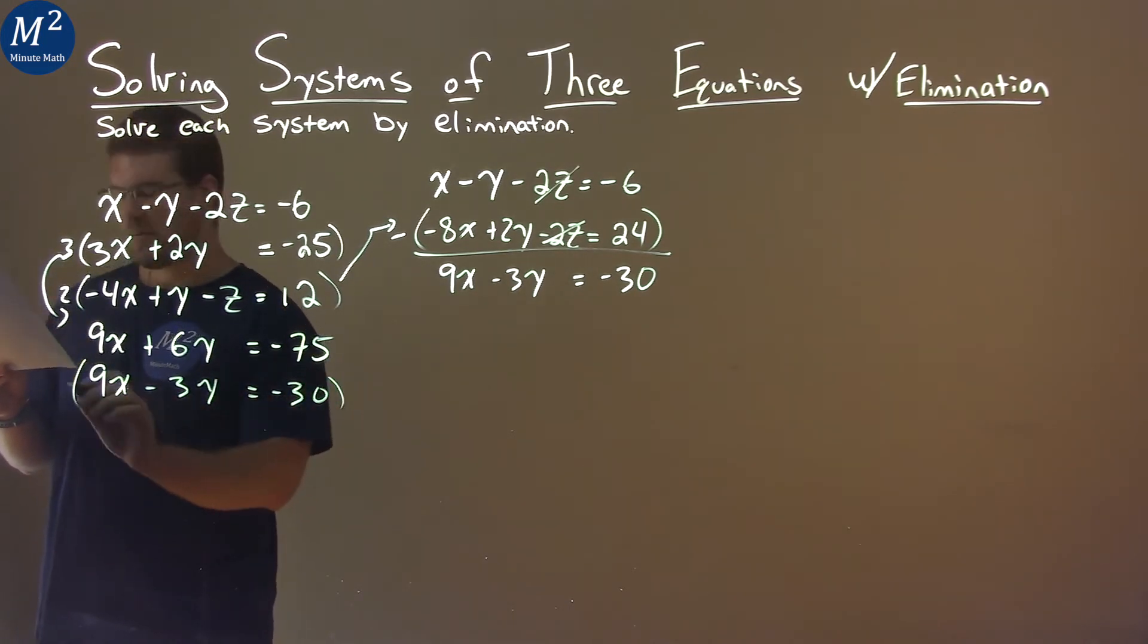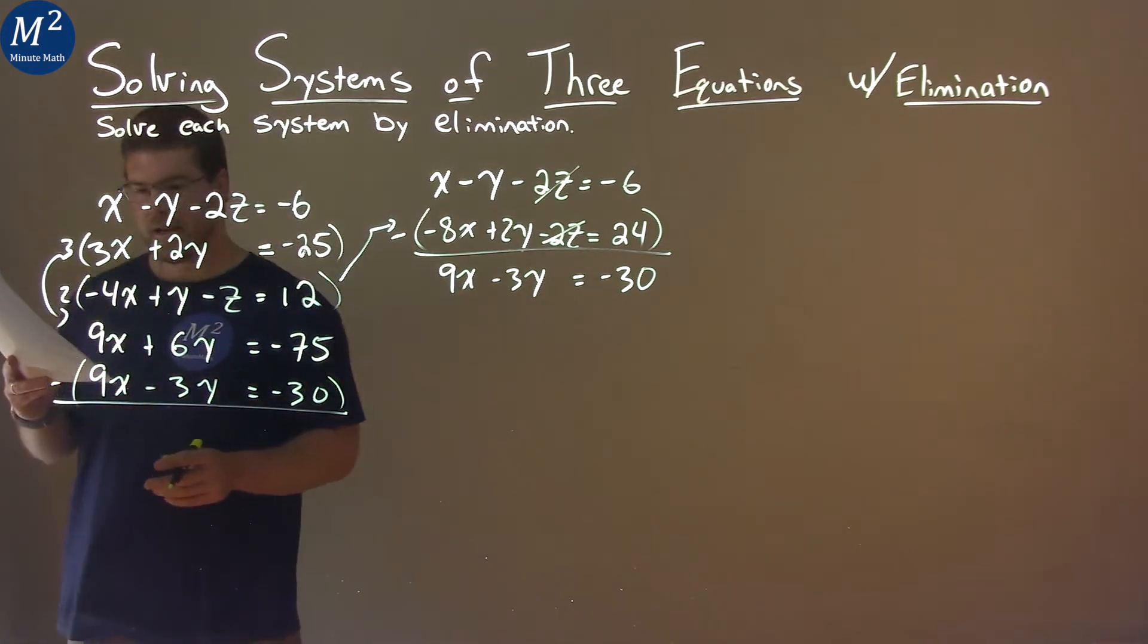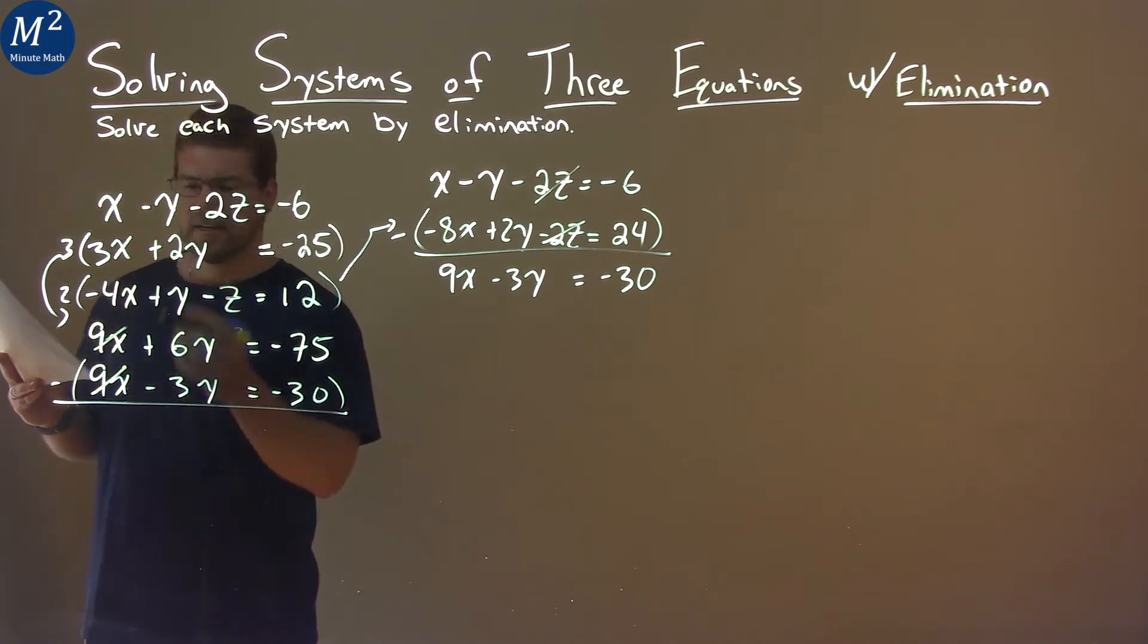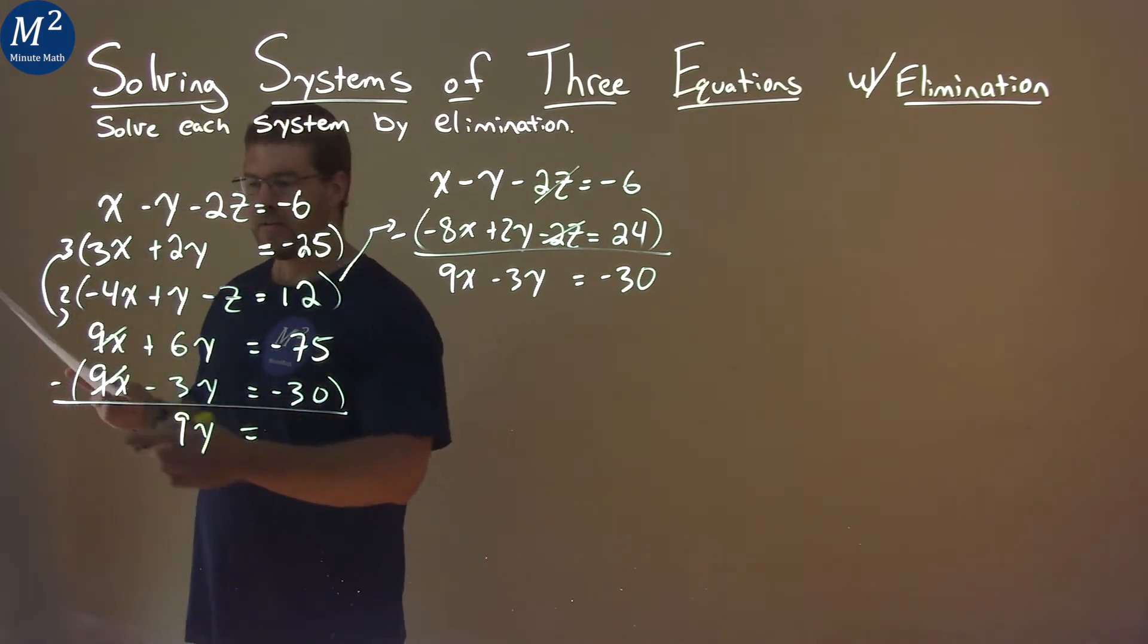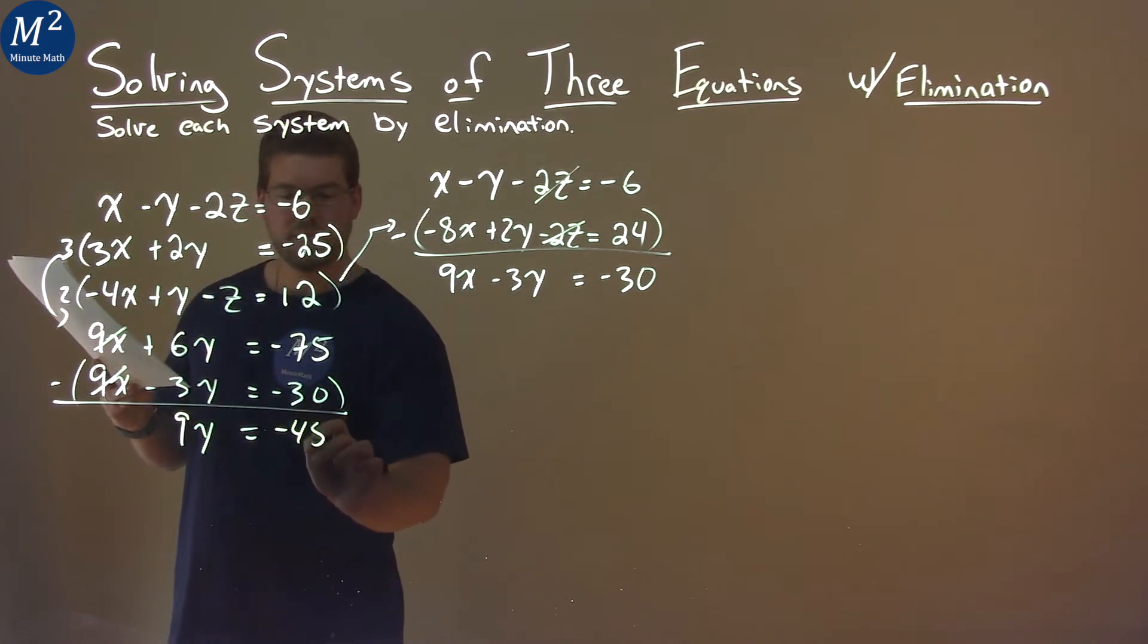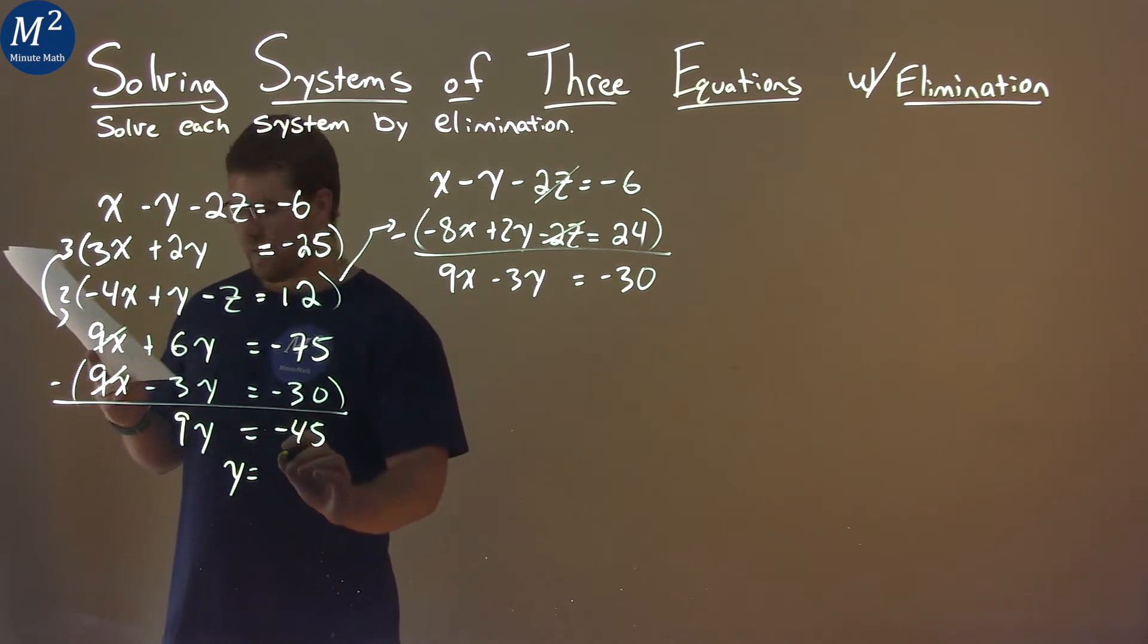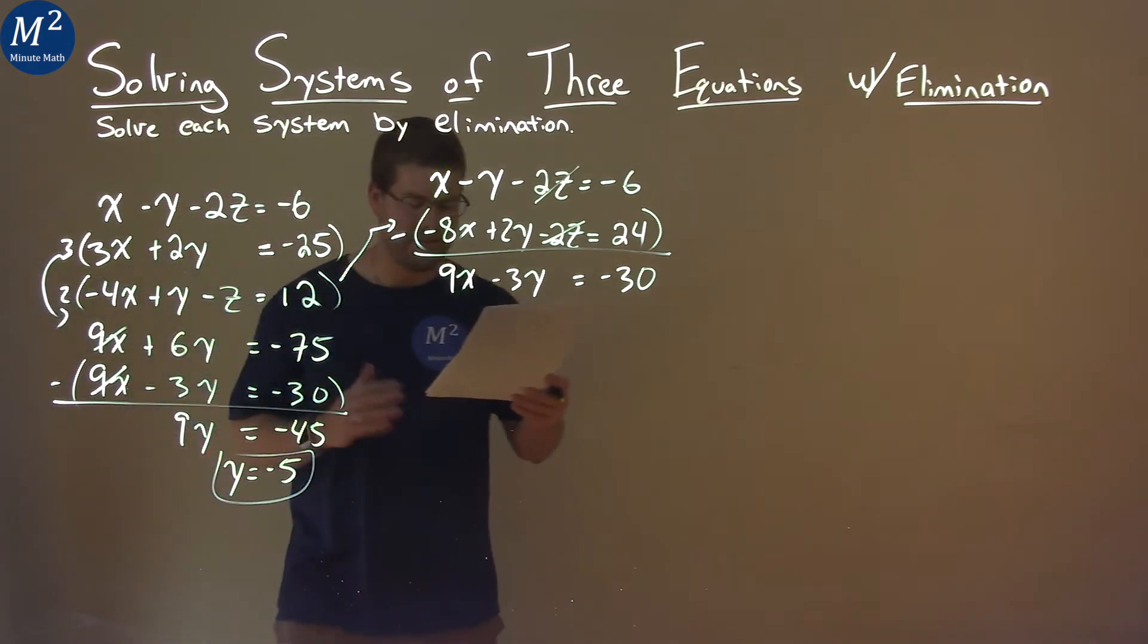Let's subtract these two equations. 9x minus 9x cancels. 6y minus negative 3y is like adding 3y, which gives us 9y. Negative 75 minus negative 30 is negative 45. Divide both sides by 9, and y equals negative 5. All that, and we got y equals negative 5.